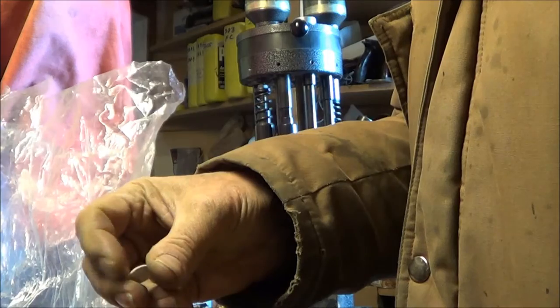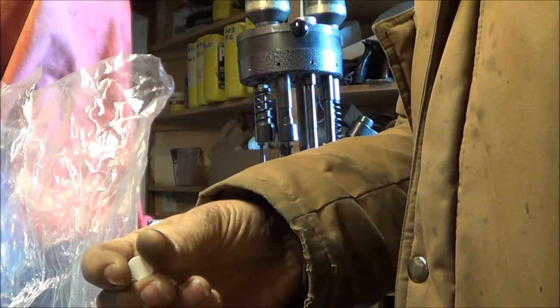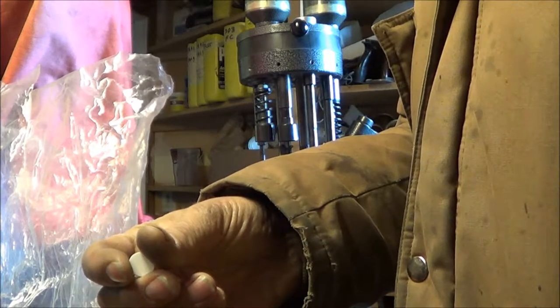I'll put a 32 gauge card wad on top of the buckshot to make a nicer crimp.